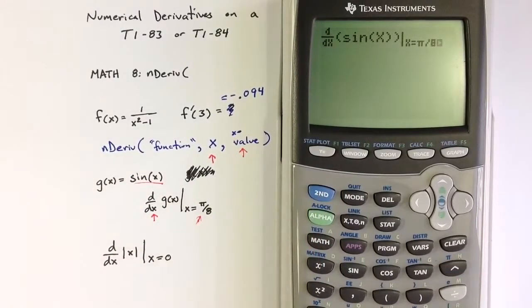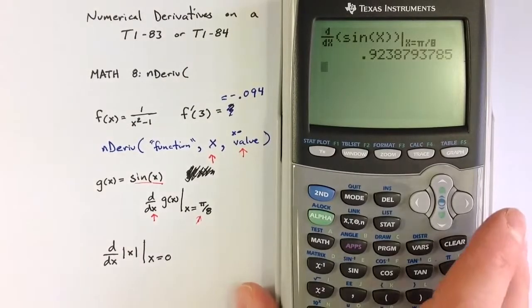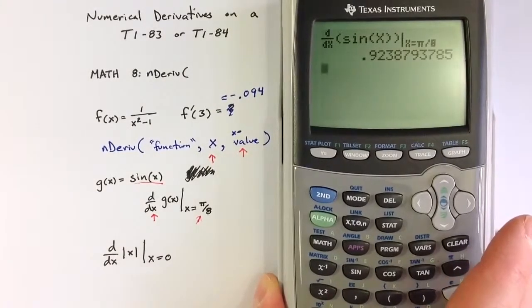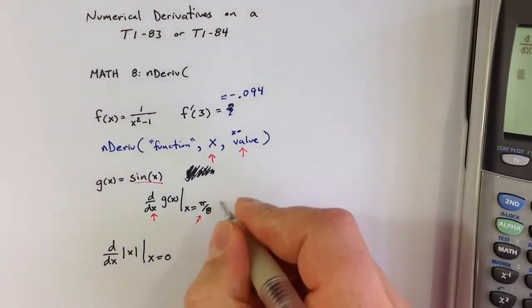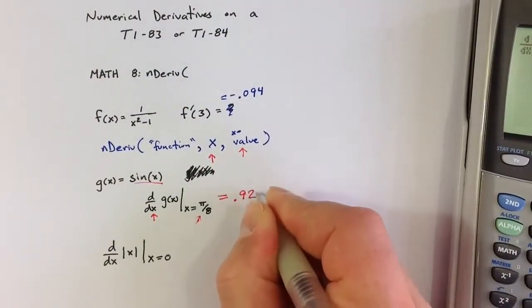Hitting Enter, we get a value for the derivative. The derivative value, numerically, is going to be approximately equal to 0.924.